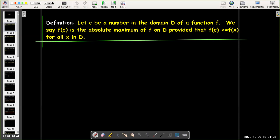We're going to start with four important definitions that are related to each other. The first one is: let c be a number in the domain D of a function f. We say f(c) is the absolute maximum of f on D, provided that f(c) is larger than or equal to any other function value in the domain.